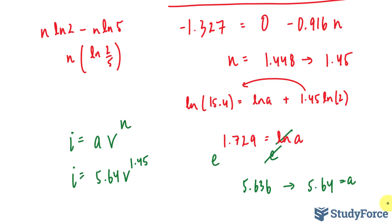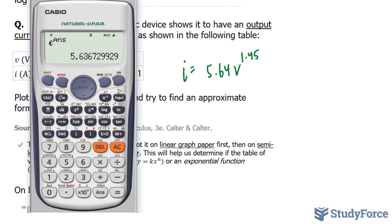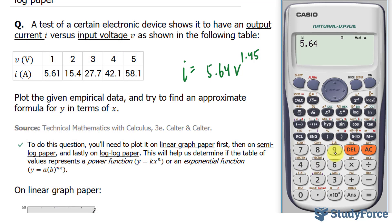Now let's test how good this formula is compared to the empirical data that was in the table. Remember, this is our theoretical equation. Here's our original data. And I'm going to substitute 1, 2, and 3 to see how it matches with the empirical data. Now, 5.64, and our v is 1, to the power of 1.45. That gives us 5.64. A little bit off, but not so much.